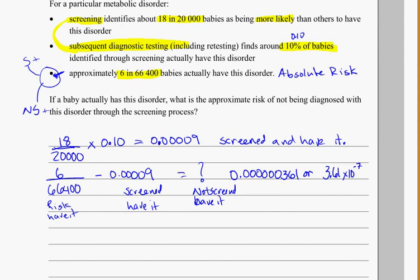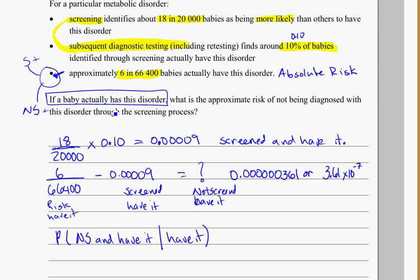What we've got to get from here is the probability that they're not screened and have it, out of the total probability that they actually have it to begin with. This becomes a conditional, or a given probability. If the baby actually has the disorder — that's the given statement. It's not asking, out of the random world, what's the probability a child will not be screened and have it. We're saying: if we know they have it, given that the baby actually has the disorder, what's the probability that they're not diagnosed through the screening process? So we have to use conditional probability.